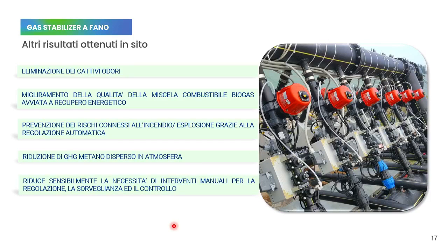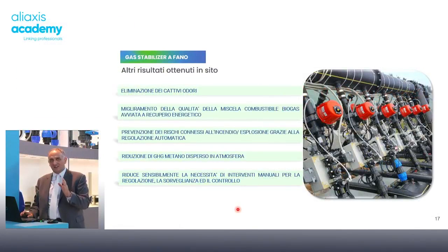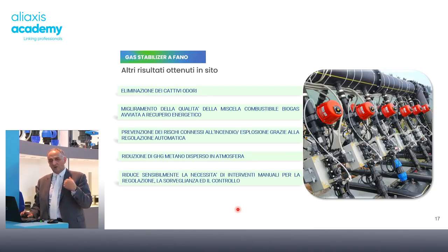Il sistema è anche un presidio di sicurezza perché tiene sotto controllo le emissioni di biogas e può consentire l'eliminazione di sacche o fuoriuscite incontrollate. Essendo automatizzato, fornisce segnali sulle problematiche nelle varie linee, ad esempio la presenza di condensa, riuscendo a diminuire la manodopera presente in sito orientandola immediatamente al problema anziché alla ricerca del problema.